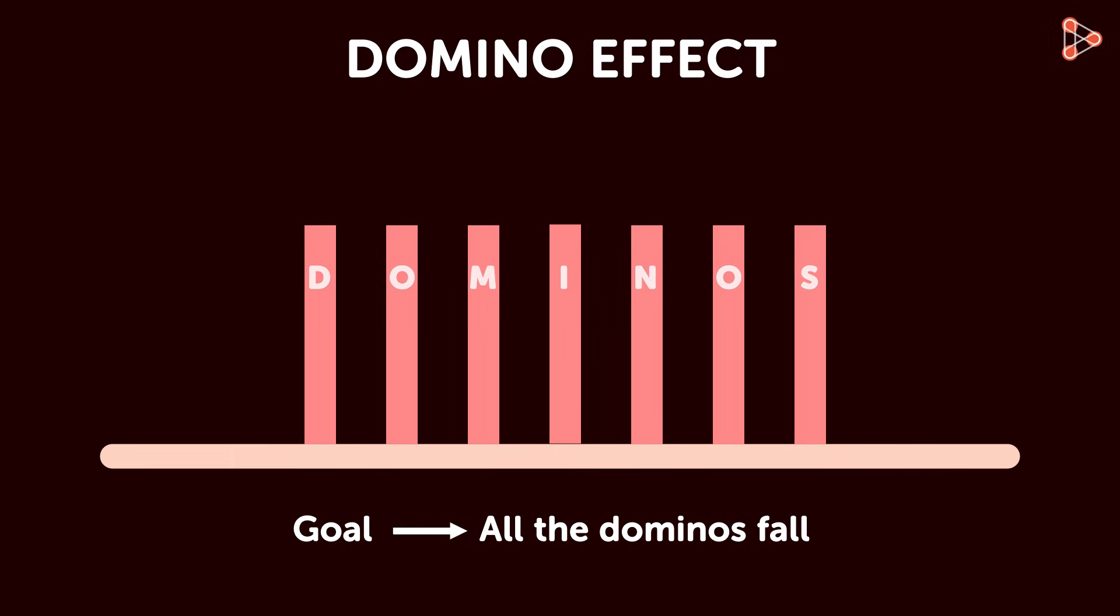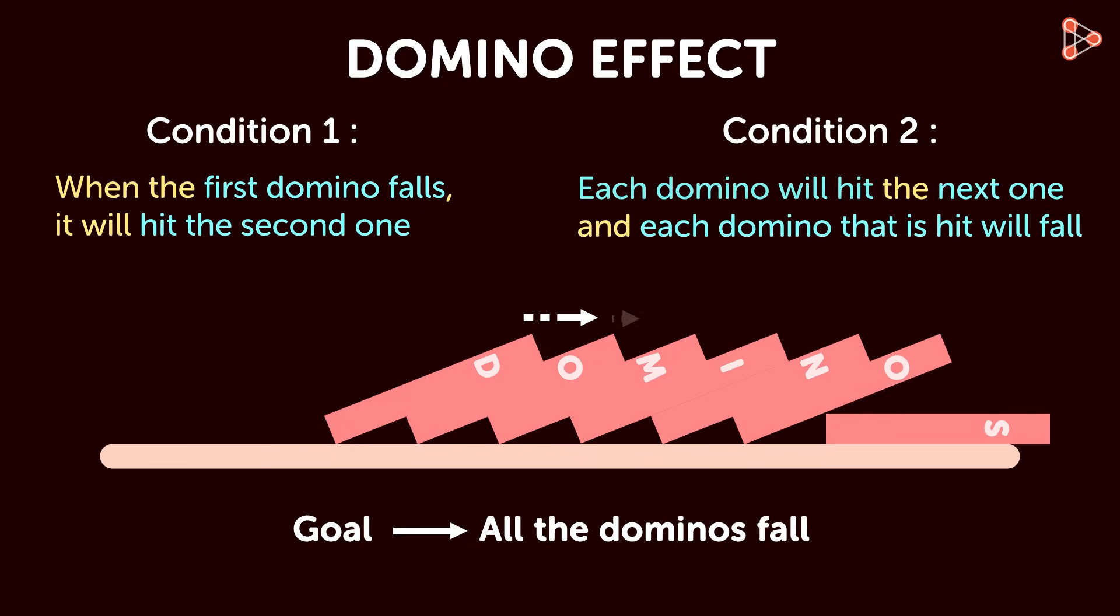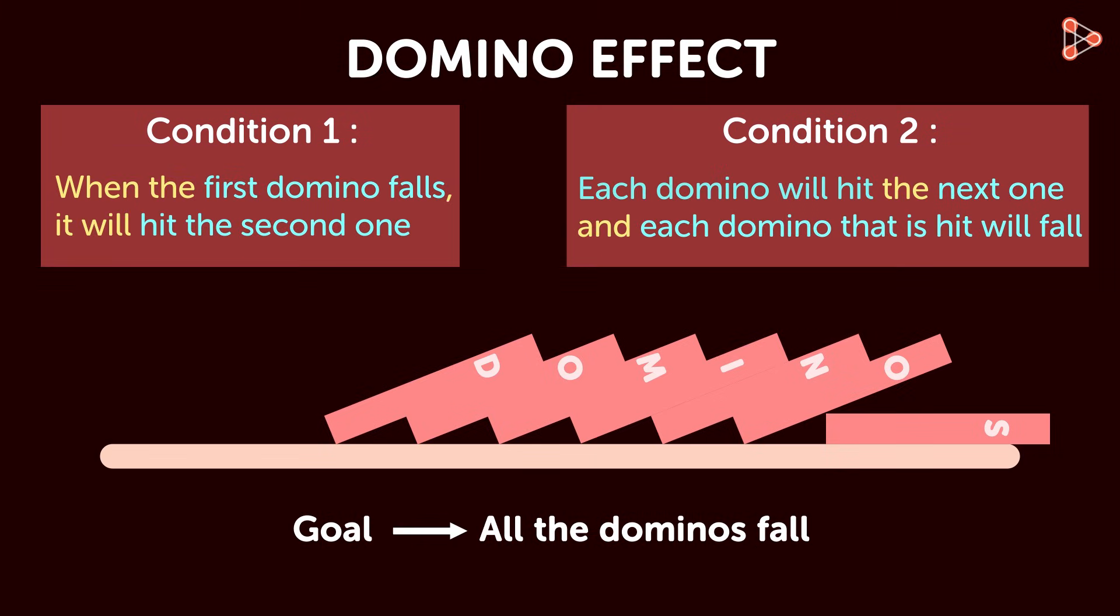The best way to achieve your goal is, one, when the first domino falls, it will hit the second one. And two, make sure that each domino will hit the next one and each domino that is hit will fall. When these two conditions are satisfied, no matter how many dominoes we queue, all of them will always fall.